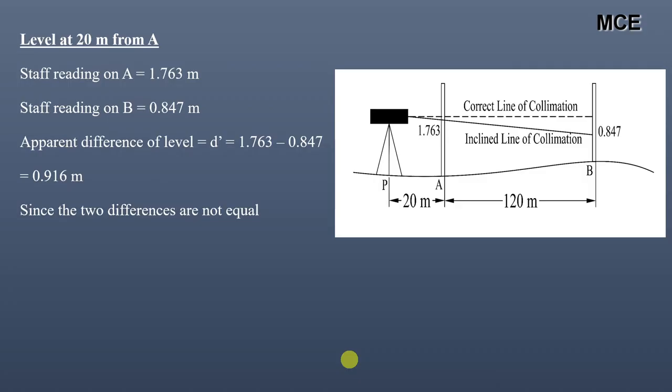Since the two differences are not equal, it means the line of collimation is not horizontal. So we will subtract the true rise. We can see point A is at a higher level than point B. So the elevation is rising from point B to point A. The true rise equals the difference between the level readings when the instrument station is exactly midway between the two stations, so true rise equals 0.364 meters.